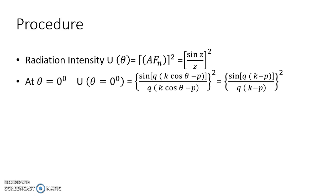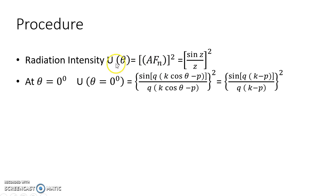Once we have the array factor equation, we can write the equation for radiation intensity. Radiation intensity is the power radiated in a particular direction, and as seen in earlier antenna parameter lectures, it equals the square of the field pattern. Since the field pattern is the array factor, radiation intensity equals the array factor squared, giving us (sin z / z)² as the general equation.